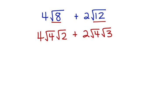Now let's take it one more step and simplify. 4, the square root of 4 becomes 2 times 2, bring down the square root of 2, plus 2. The square root of 4 simplifies to 2, bring down the square root of 3.